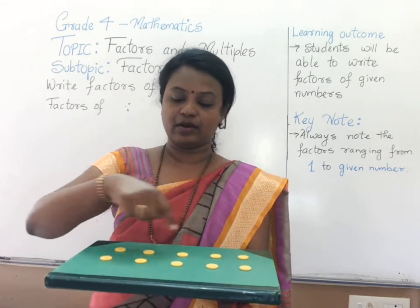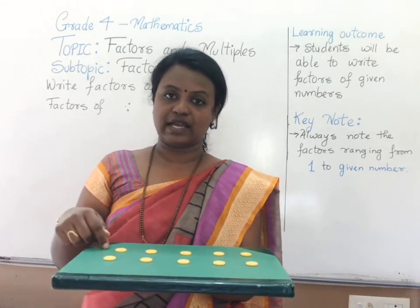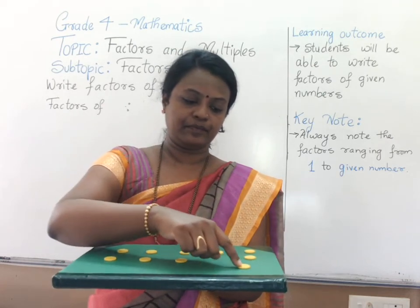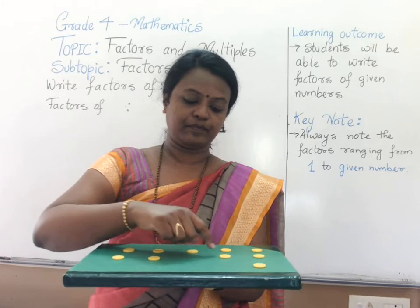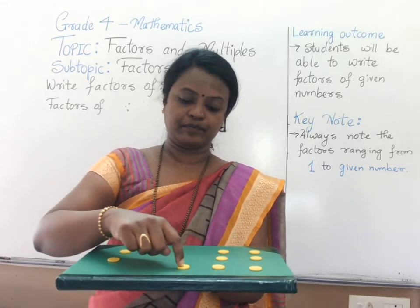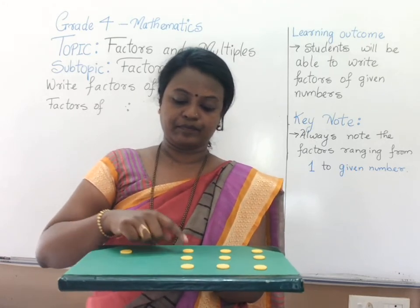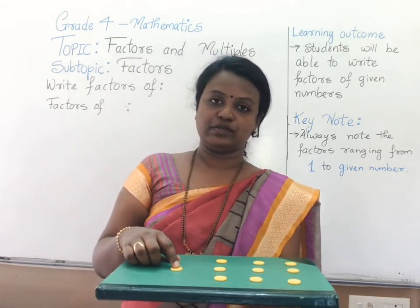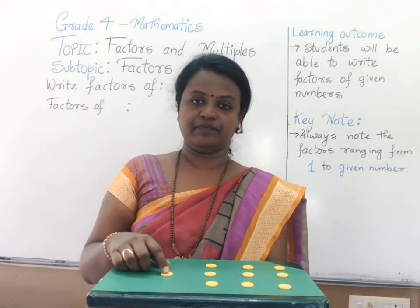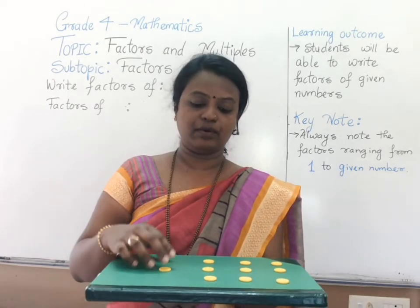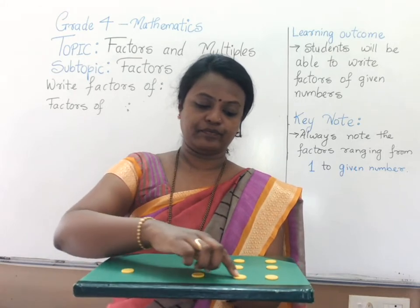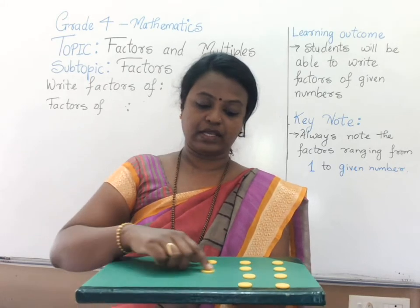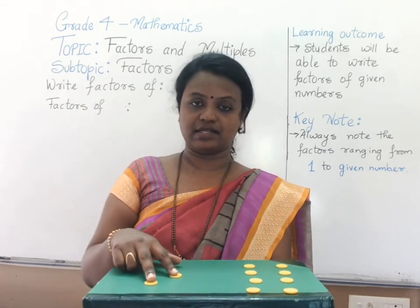2 in an order of 5 columns — that is 2 5s are 10. Let us check with 3. We cannot arrange with 3 since 1 is left out, so 10 we cannot completely divide by 3. Let us try with 4. Again we see 2 are extra when we divide.